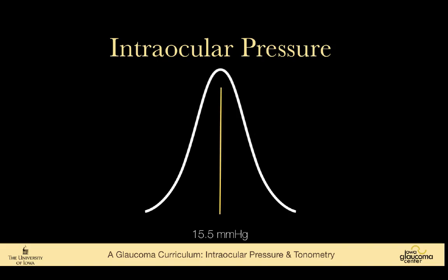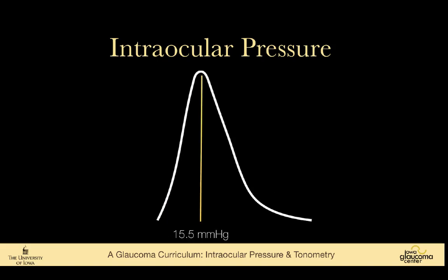This is a bell-shaped curve with a mean intraocular pressure of 15.5 millimeters of mercury, and plus or minus two standard deviations gives us 10 to 21 millimeters of mercury. But the intraocular pressure curve is not actually bell-shaped — it's skewed to the right. There are very few people with pressures under 10 mmHg unless they've had filtering surgery, but about 10% of adults have pressures above 21 mmHg, which we consider ocular hypertension.